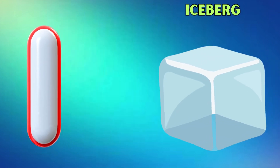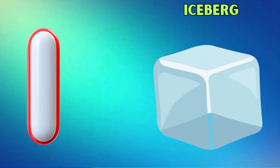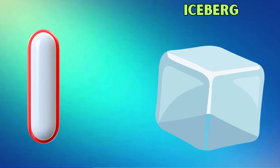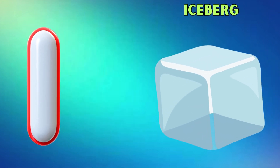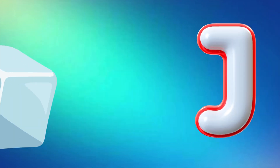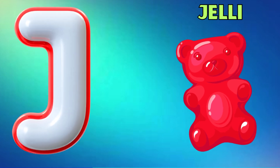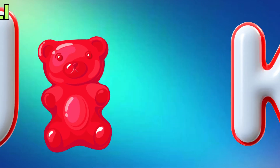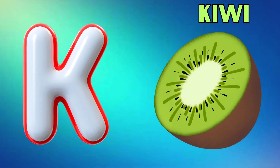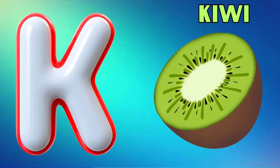I is for iceberg, iceberg. J is for jelly, jelly. K is for kiwi, kiwi.